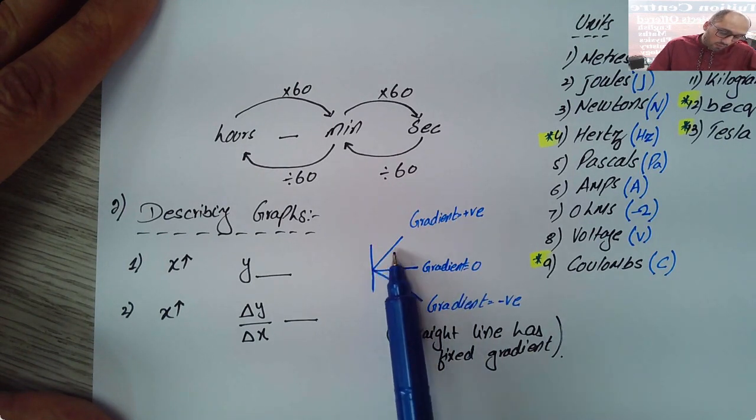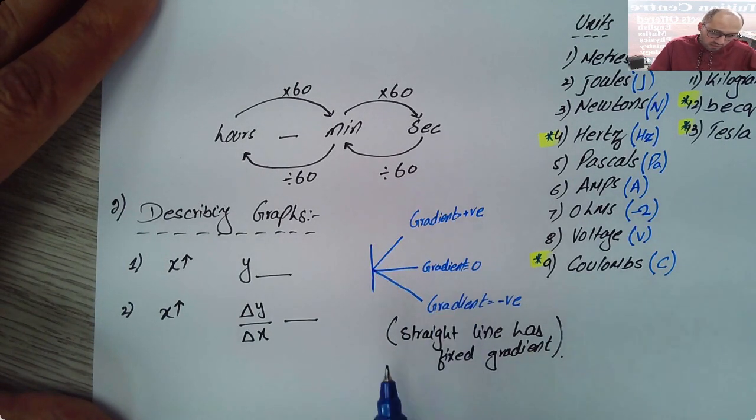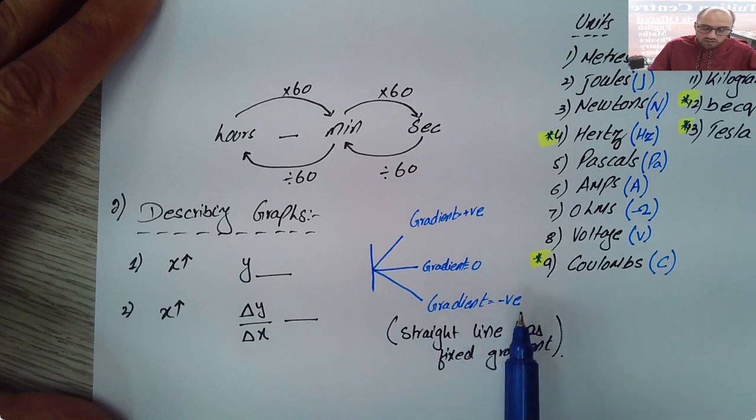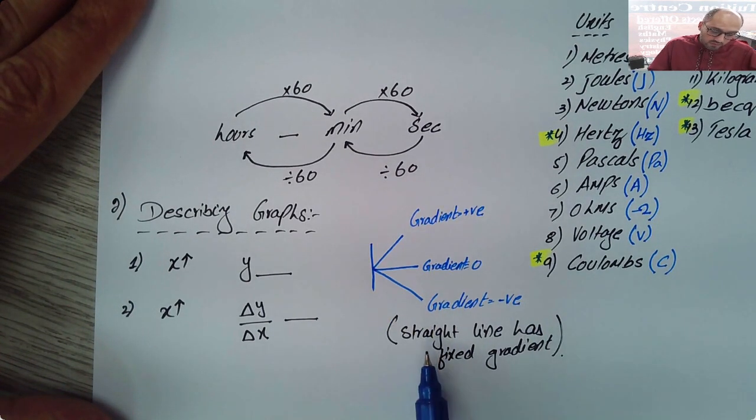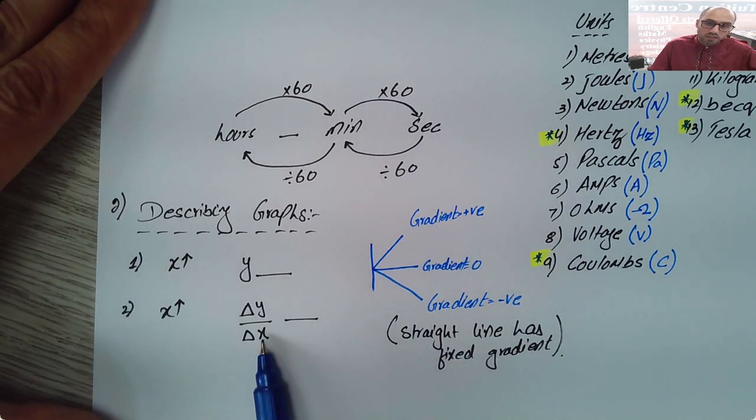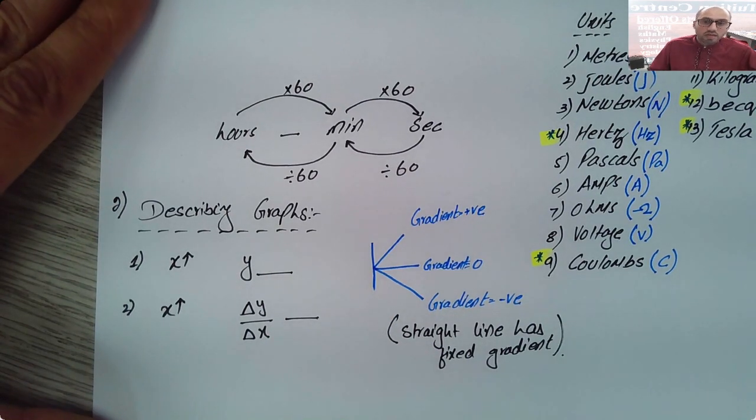You can see here if a line is horizontal then it will have a zero gradient. If a line is going upwards then it will have a positive gradient. If a line is going downwards then it will have a negative gradient. And there's one more thing to remember. If it is a straight line graph then the gradient will remain constant. If it is not a straight line graph then the gradient will change.